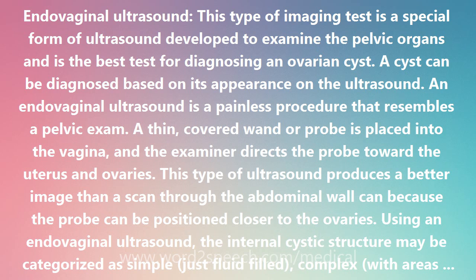An endovaginal ultrasound is a painless procedure that resembles a pelvic exam. A thin, covered wand or probe is placed into the vagina, and the examiner directs the probe toward the uterus and ovaries. This type of ultrasound produces a better image than a scan through the abdominal wall because the probe can be positioned closer to the ovaries.